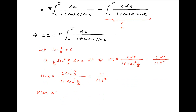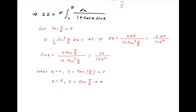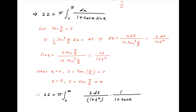When x = 0 (the lower limit), t = tan(0/2) = 0, and when x = π (the upper limit), t = tan(π/2) = ∞. Substituting these results, 2i equals π times the integral from t = 0 to ∞ of 2 dt / (1 + t²) times 1 / (1 + cos α · 2t / (1 + t²)).